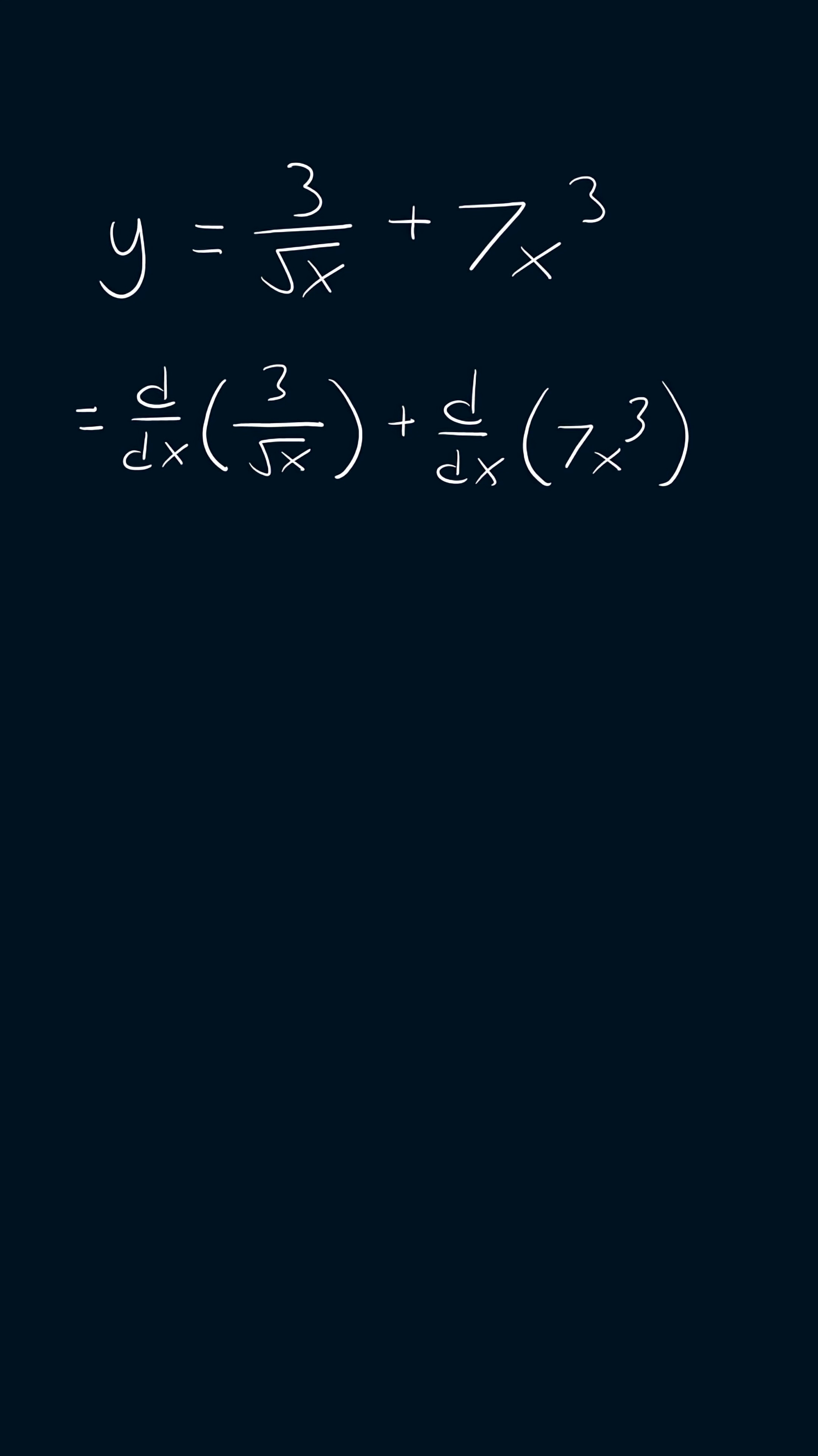I'll start by factoring out the constant. So we'll get 3 times the derivative of 1 over the square root of x plus the derivative of 7x cubed.